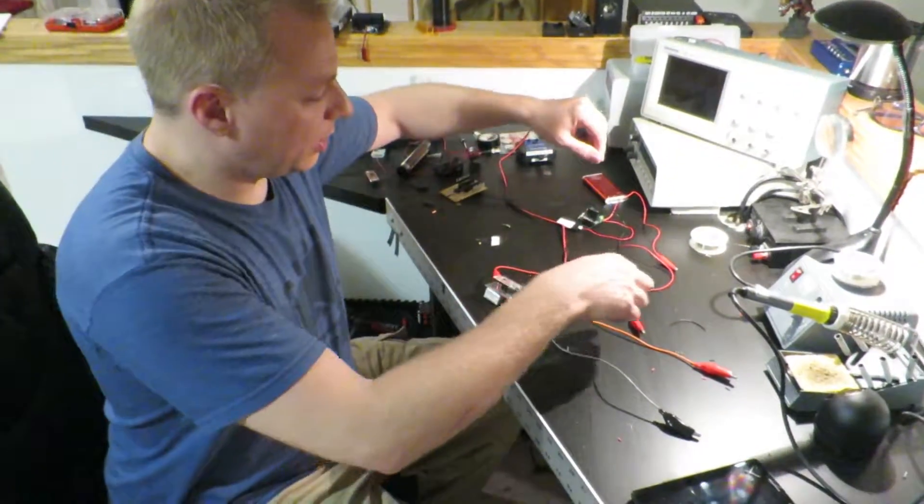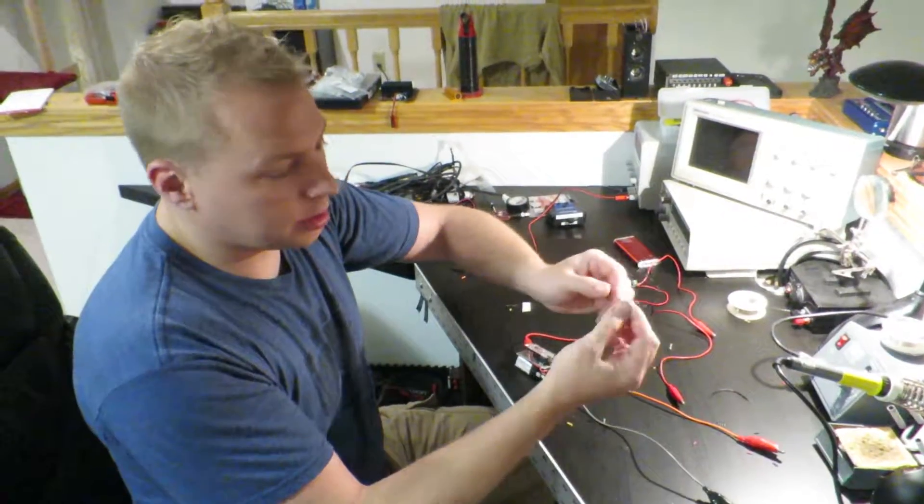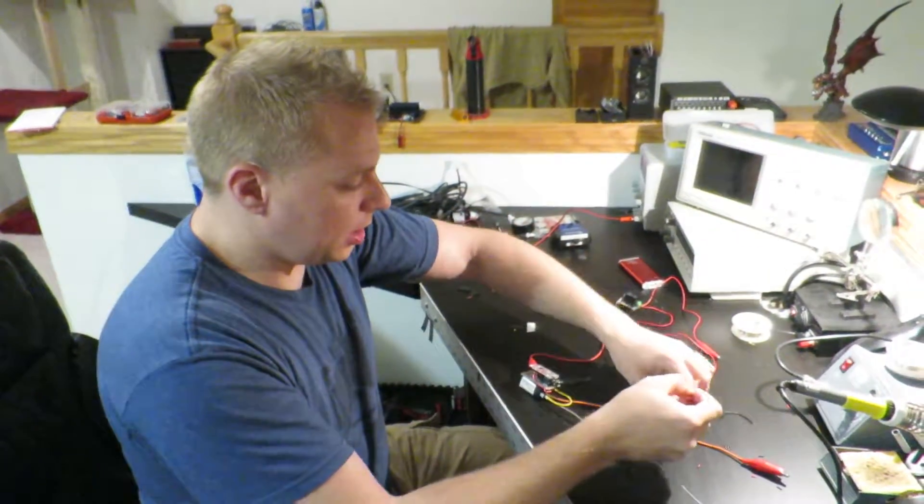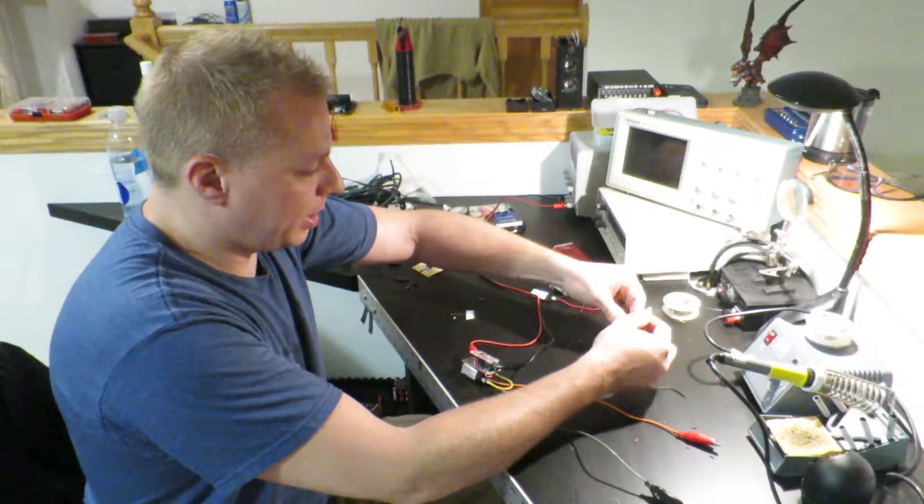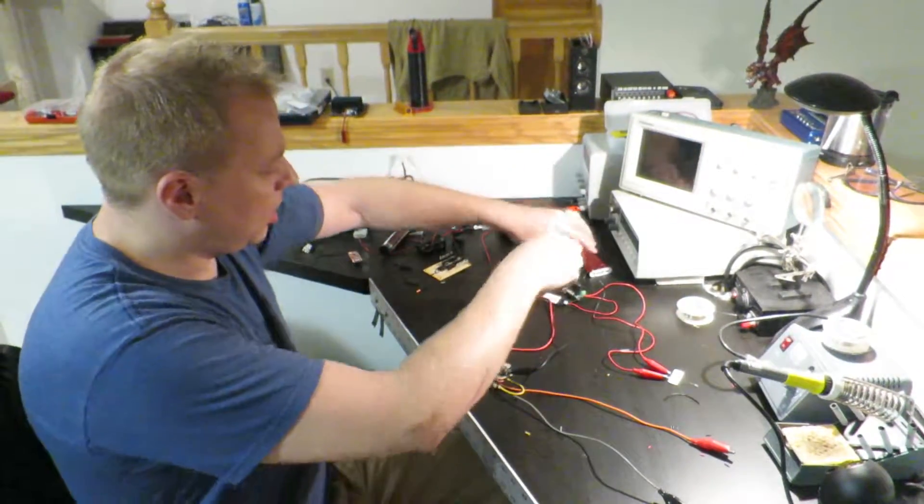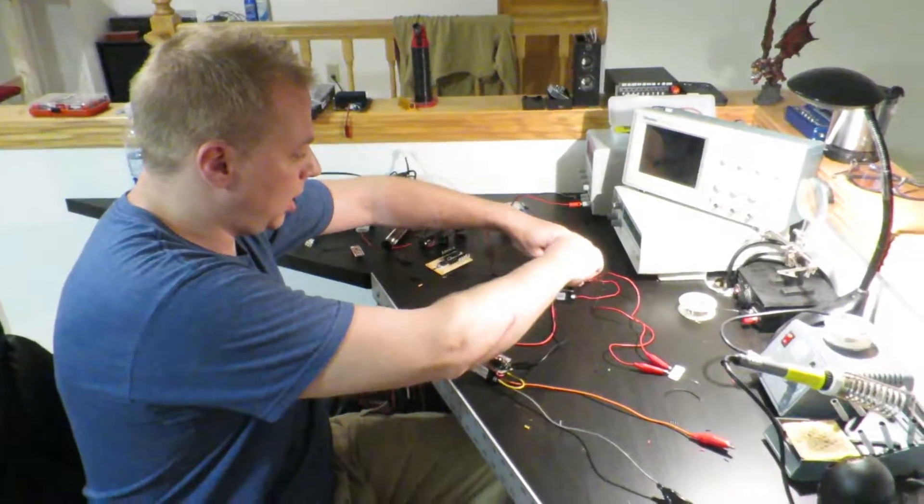So the first prototype, what I would do is take a standard igniter and connect it to these leads. I would have my rocket out in the field and then all I do is plug this into a power supply here.